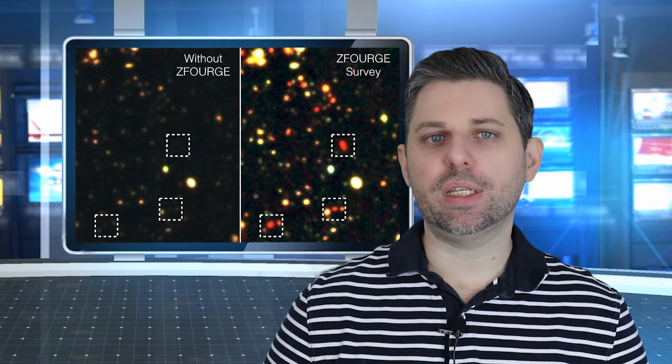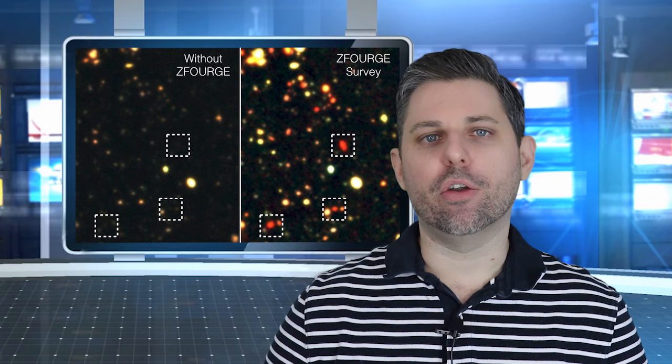Z-Forge not only measured the distances to these galaxies, but also how massive they are, how fast they're forming new stars, and how much energy they're emitting. Such information allowed us to classify these galaxies according to their physical properties and thus construct a family tree to better investigate how they evolved through cosmic time.